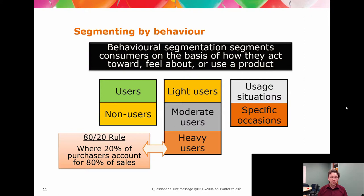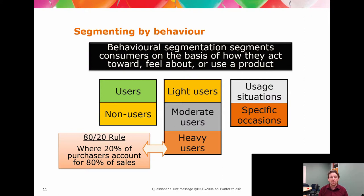If you pull up your strategy matrix and say, here's the plan — we're going to make a new product and we're going to sell it to our existing users — then when you come down to behavioral segmentation, you've automatically lit up the user. You're then choosing between which type of user, and then choosing the usage. You can actually be driven by your strategy in terms of your segmentation.